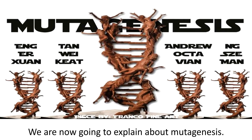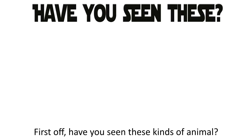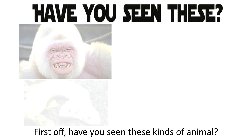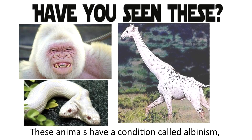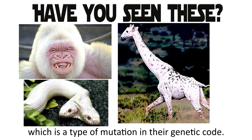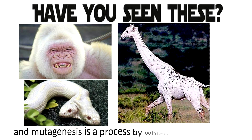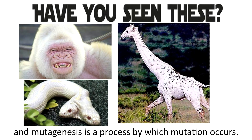We are now going to explain about mutagenesis. Have you seen these kinds of animals? These animals have a condition called albinism, which is a type of mutation in their genetic code. There are many other types of mutation that may or may not show a phenotypic trait, and mutagenesis is a process by which mutation occurs.